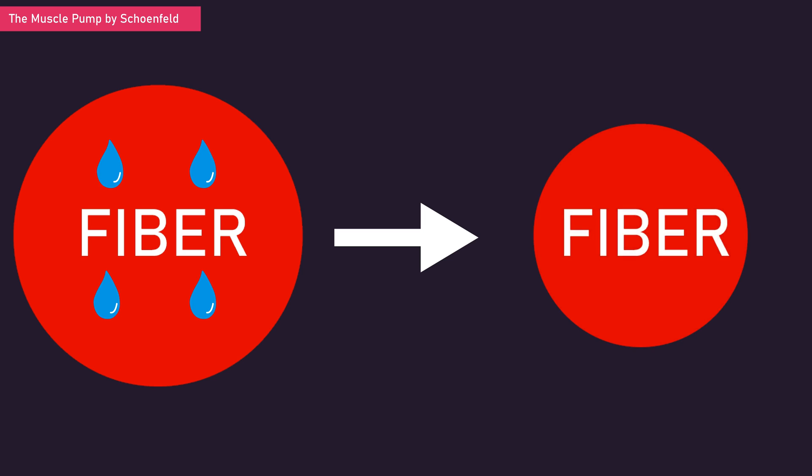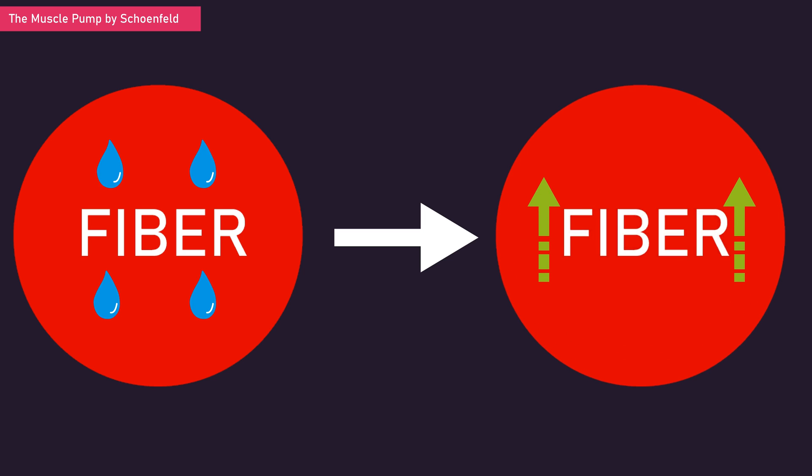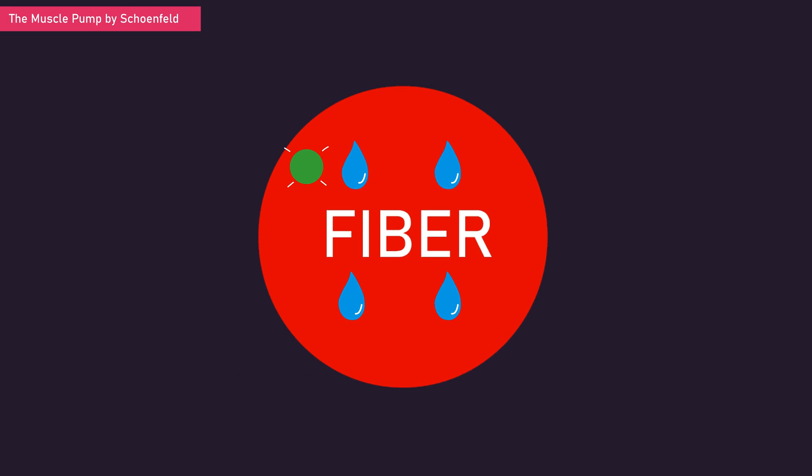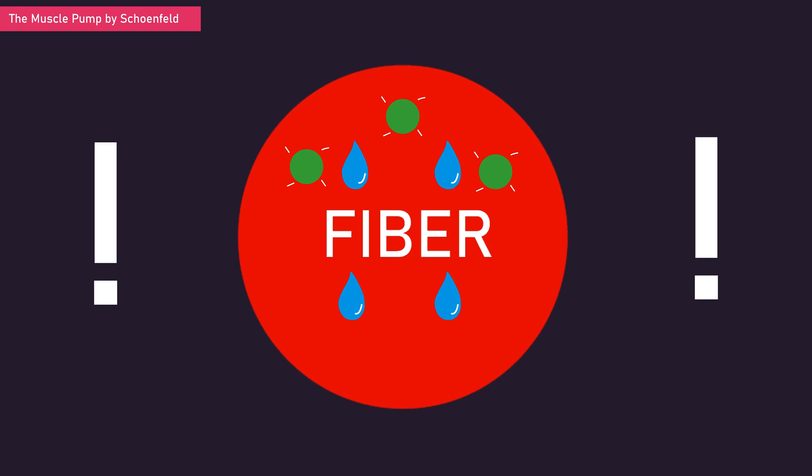Firstly, muscle fiber swelling, that is, the enlargement of a muscle fiber due to fluid accumulation which occurs during the pump, has been mechanistically associated with muscle fiber growth. More precisely, osmosensors within muscle fibers can detect the buildup of fluid that produces swelling. Such swelling may be considered a threat to the integrity of the fiber, thus initiating anabolic and anti-catabolic pathways that ultimately hypertrophy the muscle fiber for reinforcement.